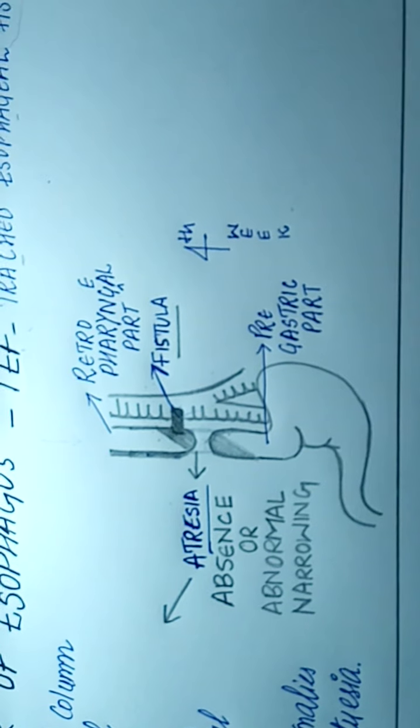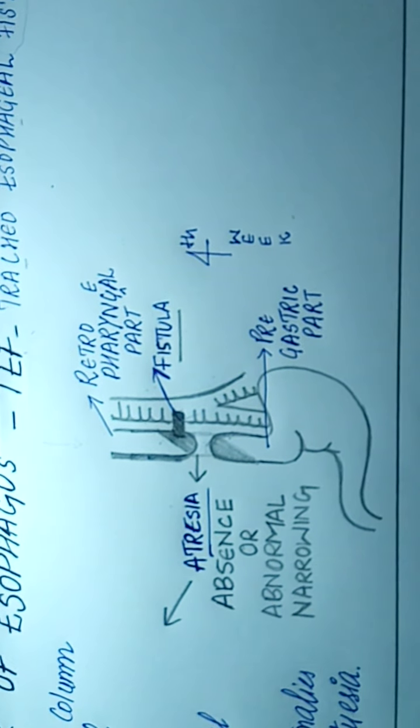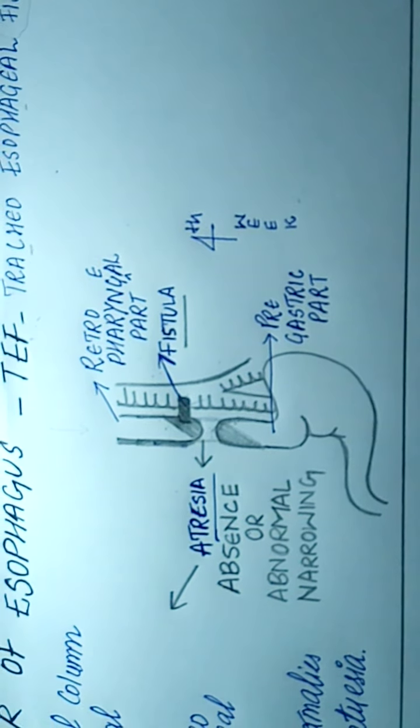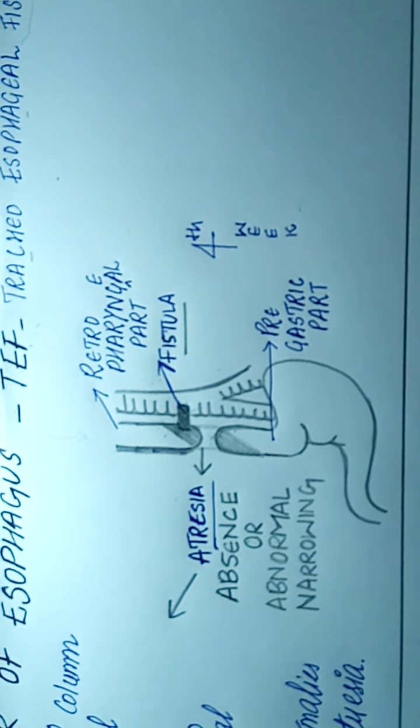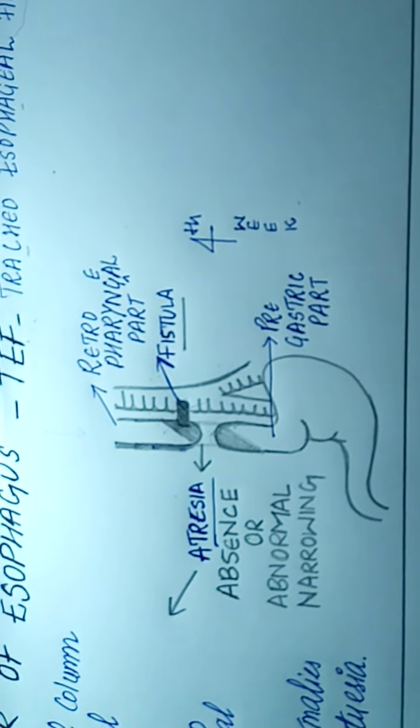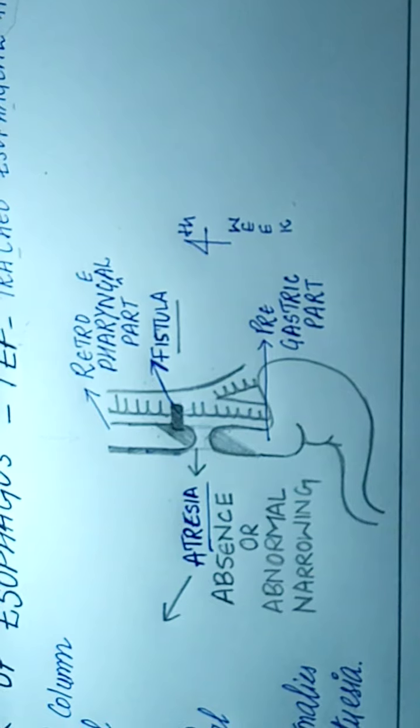According to the development, in fourth week there is a formation of laryngotracheal groove, and from this tube there will be development of two tubes, one esophagus and one trachea.